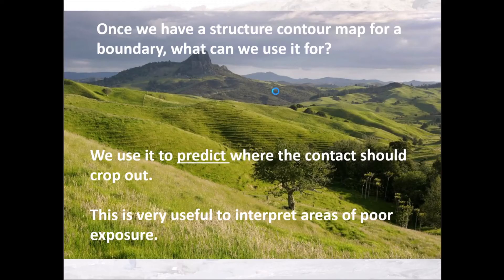You might ask: if I've already got a geological map, why bother drawing structural contours? Well, imagine you're working in an area with very limited exposure — a couple of crags in the distance, but the rest covered by drift deposits with no visible rocks. You could use a structural contour map produced from areas that do have exposure and use it to interpret where the geology would be in areas of poor exposure.